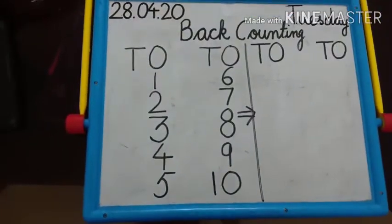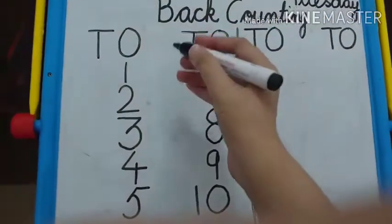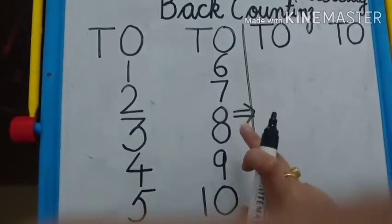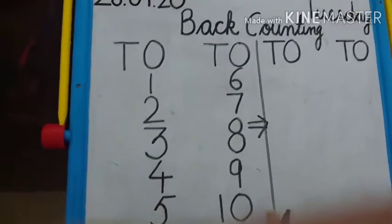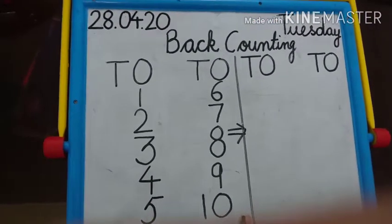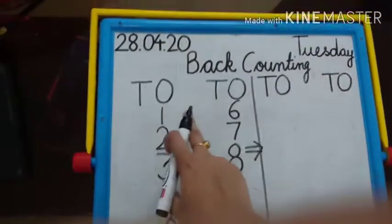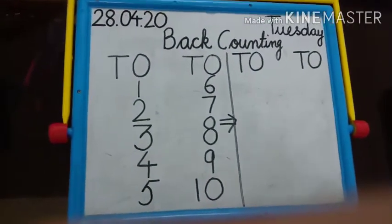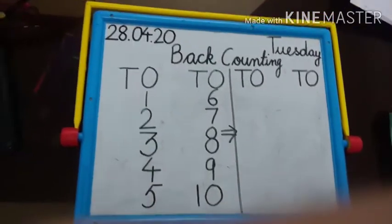Aise hi jab bhi hum counting karte hain to us mein bhi back counting hoti hai. Like when we start counting 1, 2, 3, 4, 5, 6, 7, 8, 9, 10 - aise hi jab hum back counting karte hain to hum kahan se start karte hain? Suppose agar humein 10 se back counting start karni hai, to hum kya karenge? 1 se start karenge? No. Hum kahan se start karenge? 10 se. Kyun? Kyunki humein back counting karni hai.